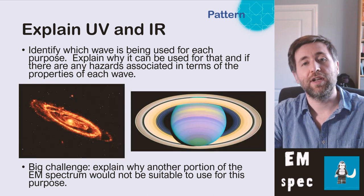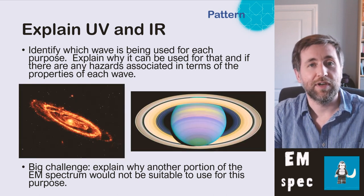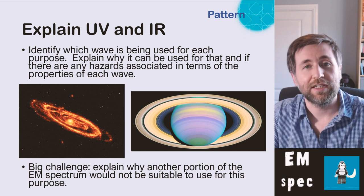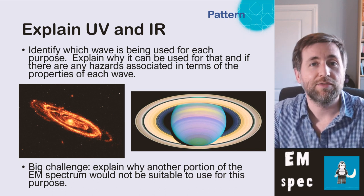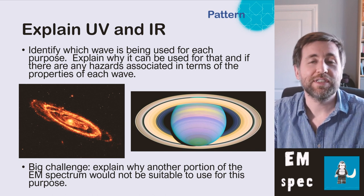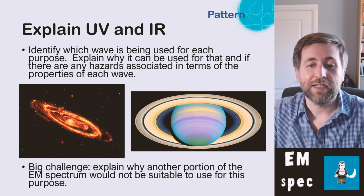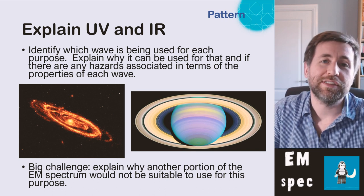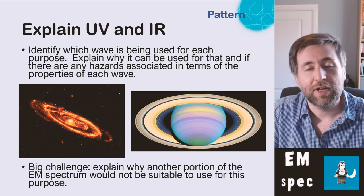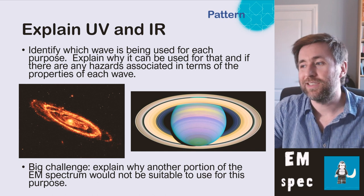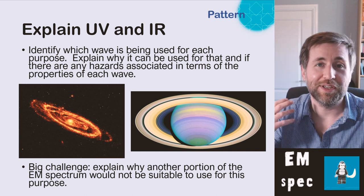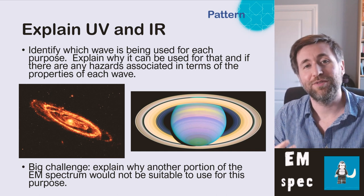We also use ultraviolet and infrared to observe our universe. On the left there is a galaxy in the infrared portion — you're looking at the infrared light emitted from that galaxy. On the right is actually Saturn, but in ultraviolet — you're seeing the ultraviolet light being given off by the gases orbiting inside Saturn.